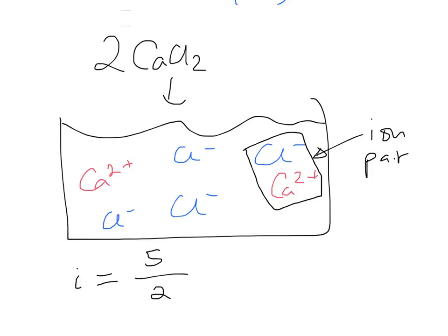You can see as they stick together, there's fewer particles. And that gives us a Van't Hoff factor of two and a half. So it's actually just a complete coincidence it comes out exactly the same. But you can see by ion pairing, you're reducing the total number of things in solution.